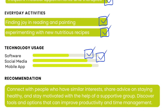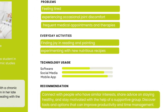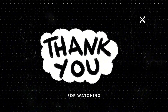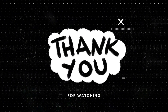Jessica's technology usage is: software 55%, social media 83%, and mobile apps 90%. Her recommendations are to connect with people who have similar interests, share advice on staying healthy, and stay motivated with the help of a supportive community. She also seeks to discover tools and options that can improve productivity and time management. That's all from us — thank you.